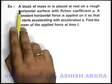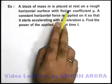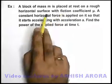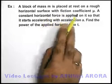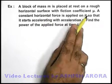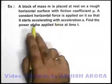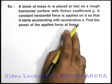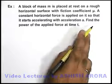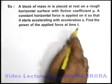In this question it says, a block of mass m is placed at rest on a rough horizontal surface with friction coefficient mu. A constant horizontal force is applied on it so that it starts accelerating with acceleration a. We are required to find the power of the applied force at time t.